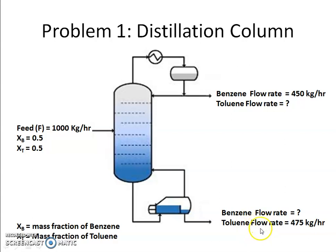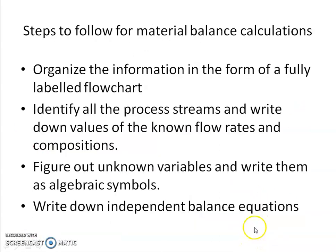Both the distillate and bottom streams also contain some amount of the other component — toluene in the distillate and benzene in the bottom product. You have been asked to calculate the amount of toluene in the distillate and the amount of benzene in the bottom product.